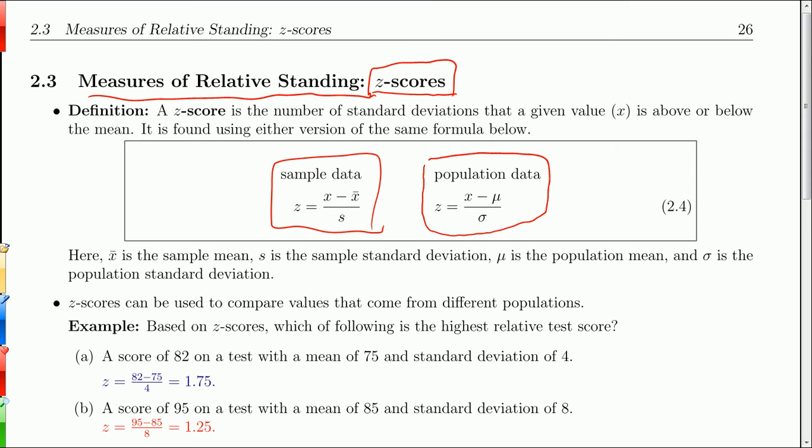When you have population data, the z-score is the exact same thing. It's the x value minus the mean over the standard deviation. The difference is really the notation here. For population data, we use population values. For sample data, we use sample values. But the calculation formula is the same.